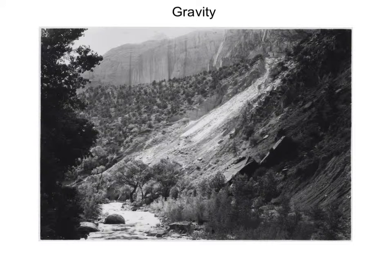Gravity influences the movement of water, such as waves, streams, and ice, but also causes rocks and soil to move downslope. Gravity erosion causes landslides.